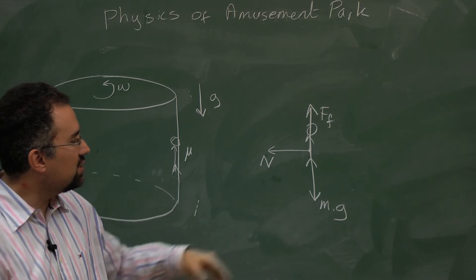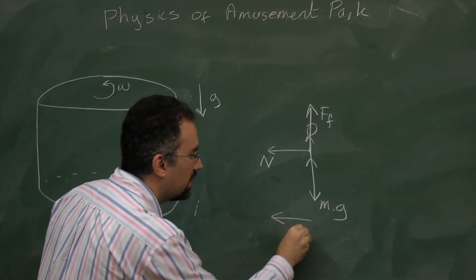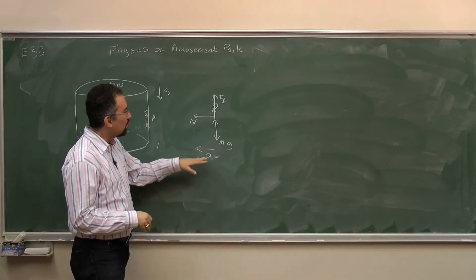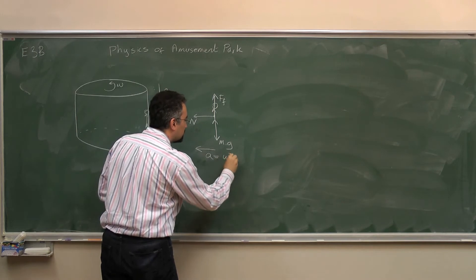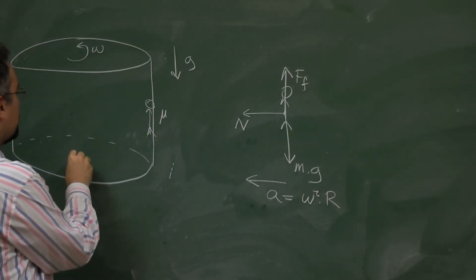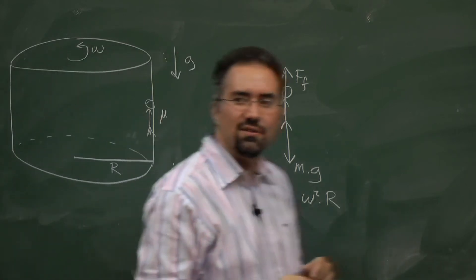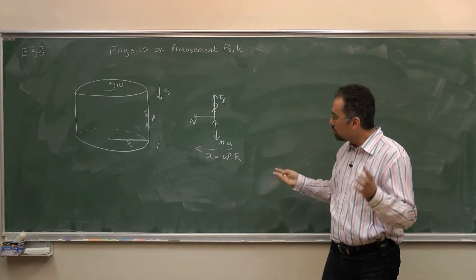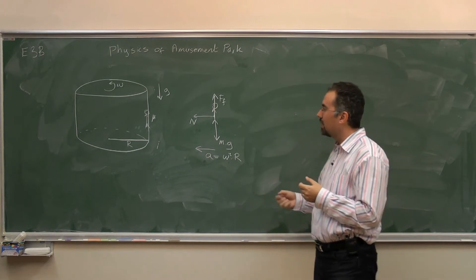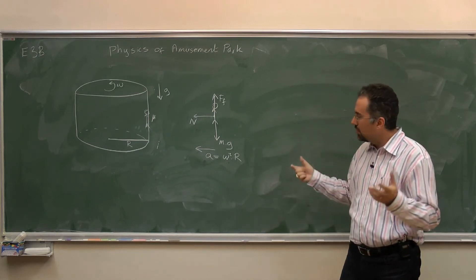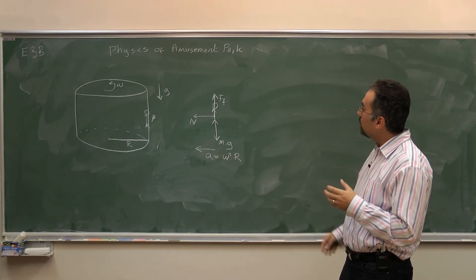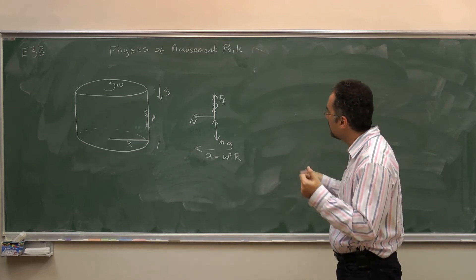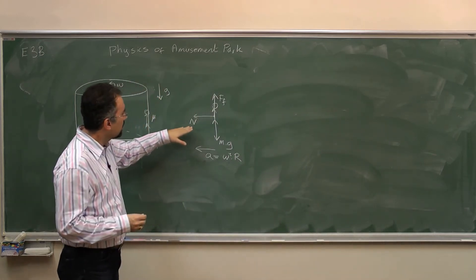The person's acceleration is centripetal, directed toward the center. That centripetal acceleration is omega squared times r, where r is the radius of the large cylinder. I defined positive as pointing toward the center, so it's plus omega squared r. If you see minus omega squared r elsewhere, that's when positive is defined outward. Now I have the free body diagram and the acceleration, so I just need to write the equations.